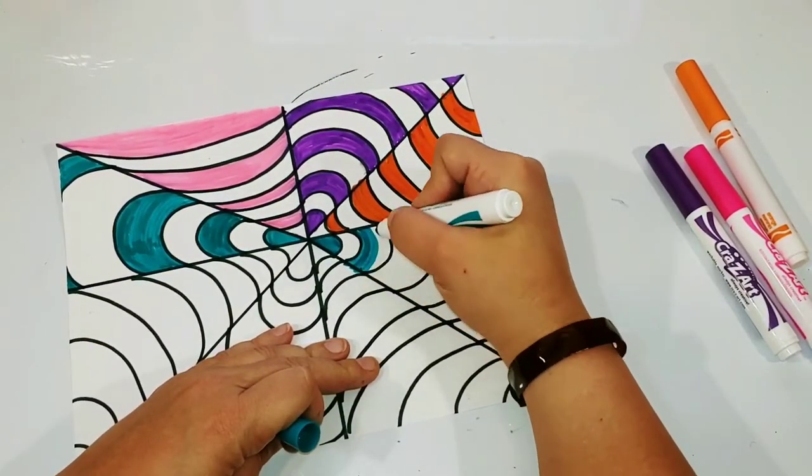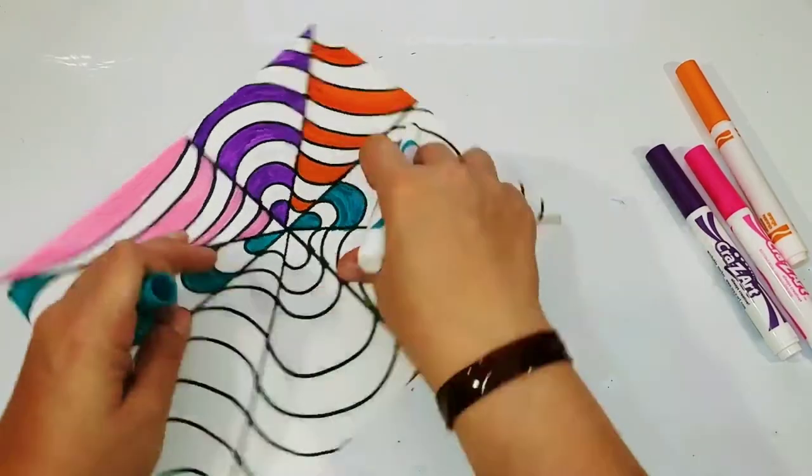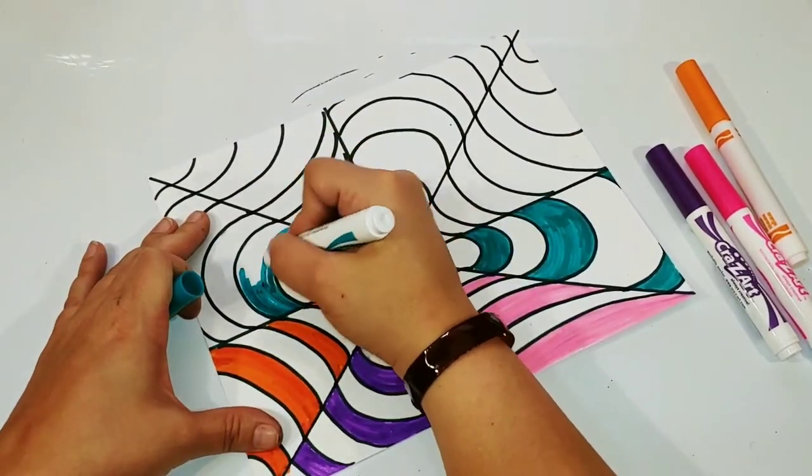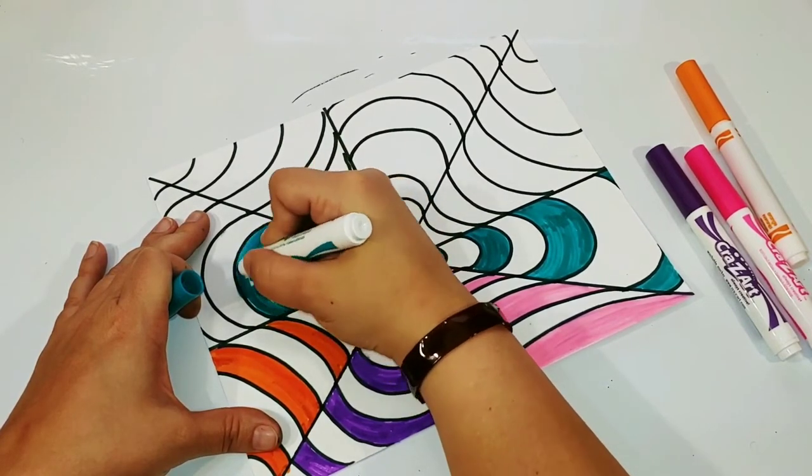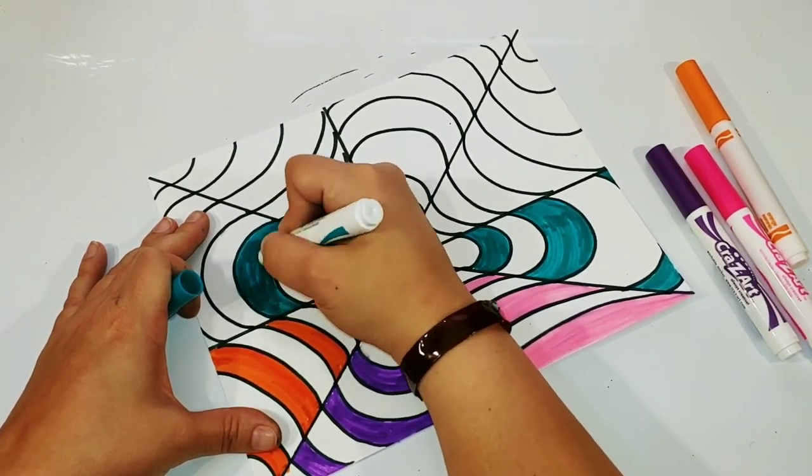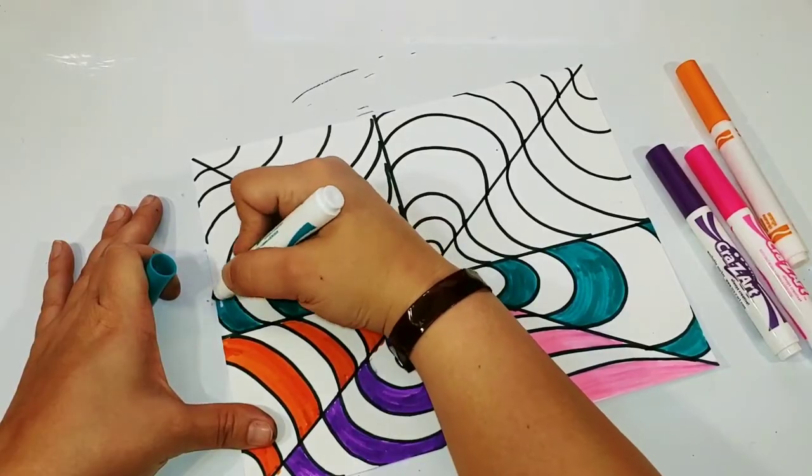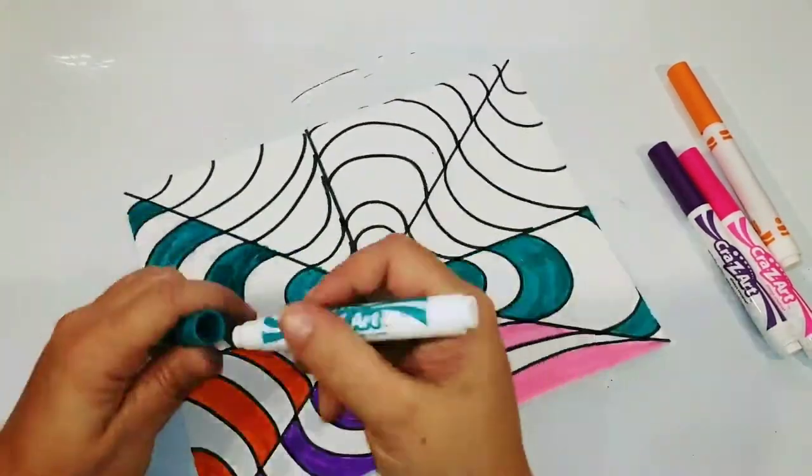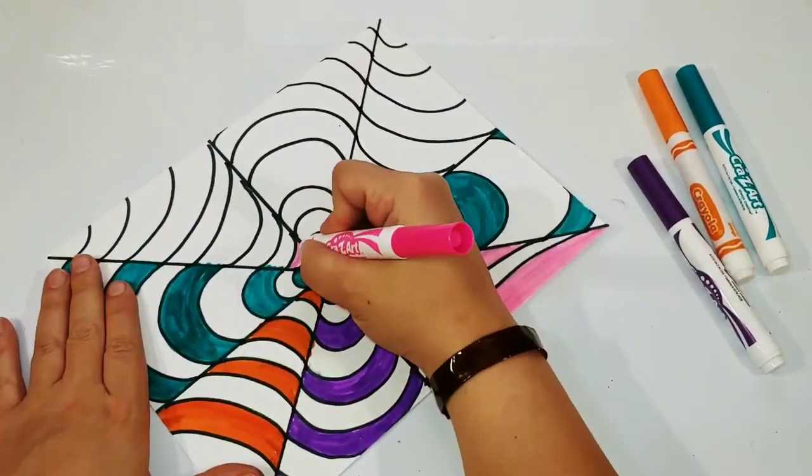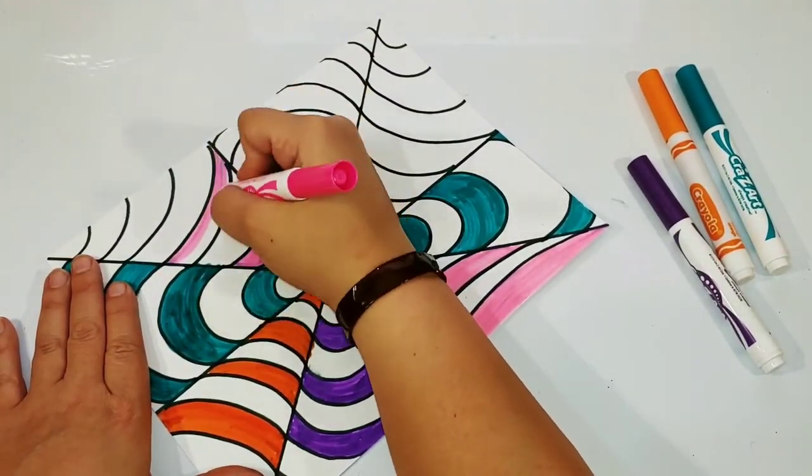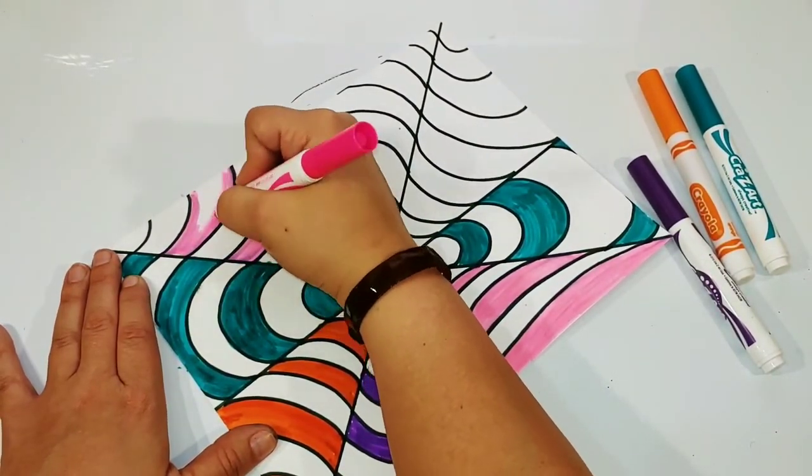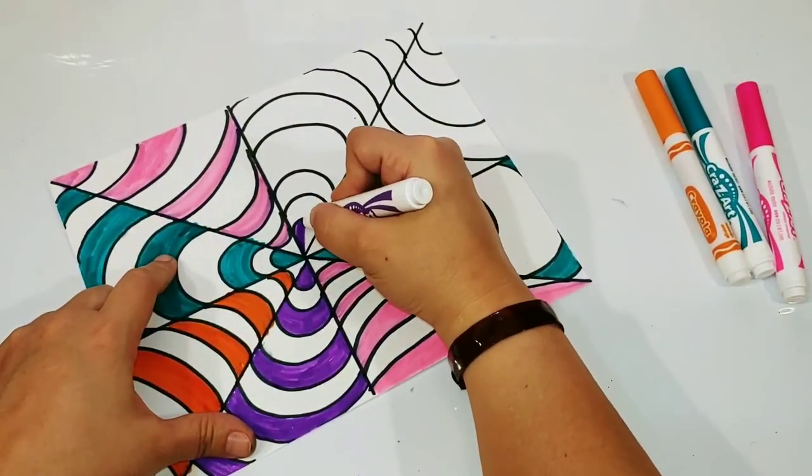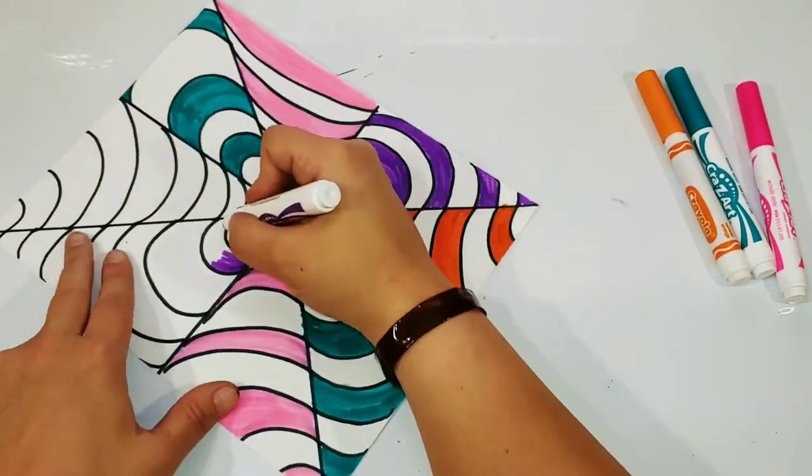We're going to start with the teal again, right in the middle so that it's touching, skip a space, then color. You guys can choose your own colors, you do not have to use the colors I'm using. You can use more than two colors, you can use more than four colors. You just want to make sure you have one color in each section just like this.